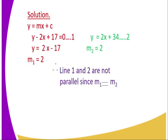For the solution, you are supposed to shift the negative 2x to the other side. Therefore, you will get y equals 2x minus 17. And the other line is y equals 2x plus 34. You can see that the gradient of line 1 is 2, and the gradient of line 2 is also equal to 2. Therefore, we can conclude that line 1 and line 2 are parallel because they have the same gradient.